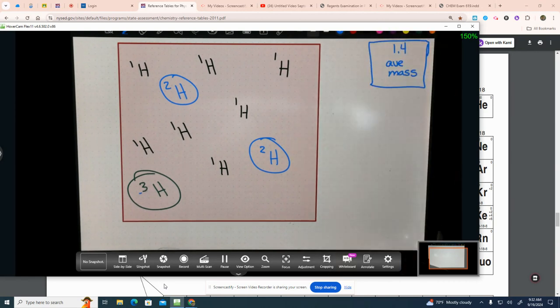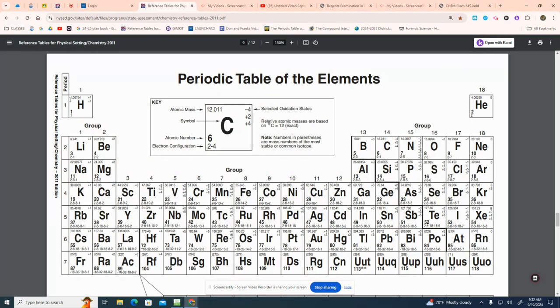Good news. Do you see how that average is closer to the 1 than it is to the 3? Why do you think that is? There's more H-1s. So, when I look at the average on the periodic table, which is 1.00794, what is the isotope that is the most common isotope?